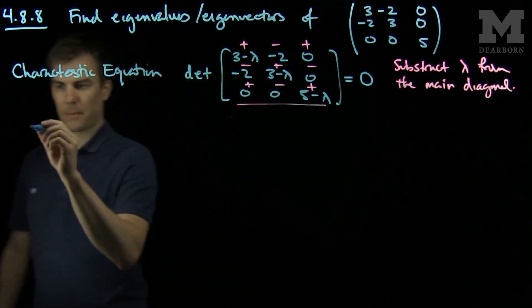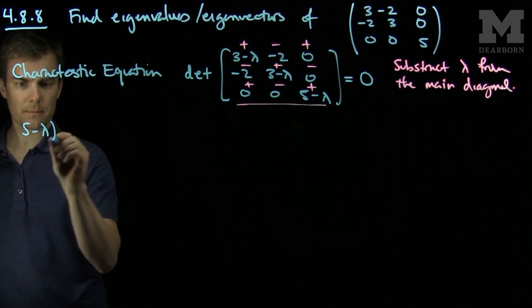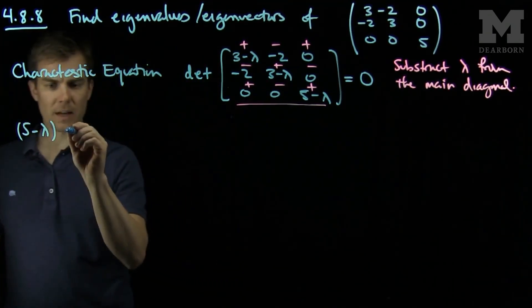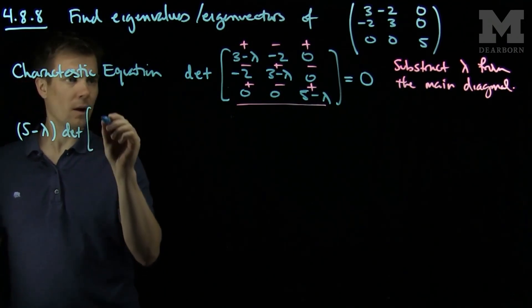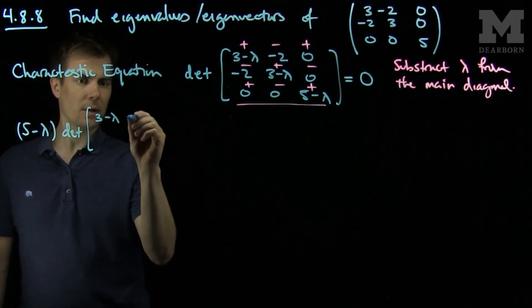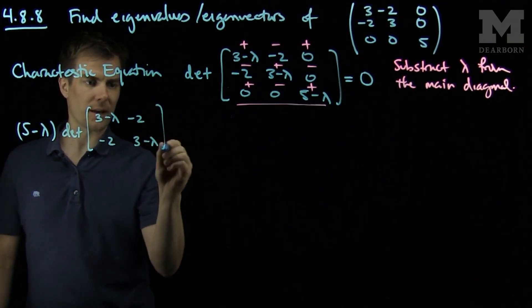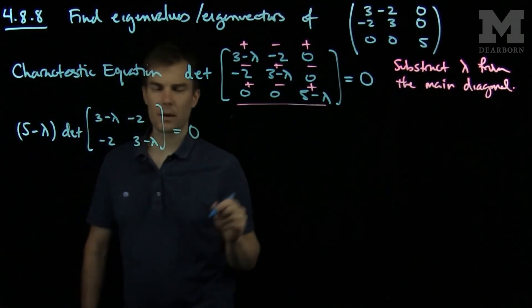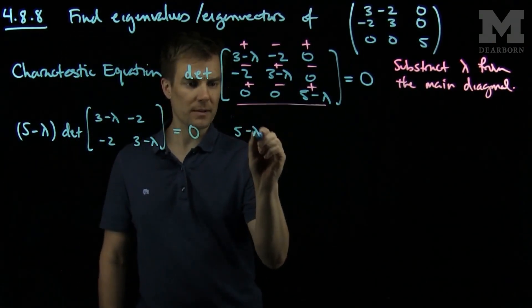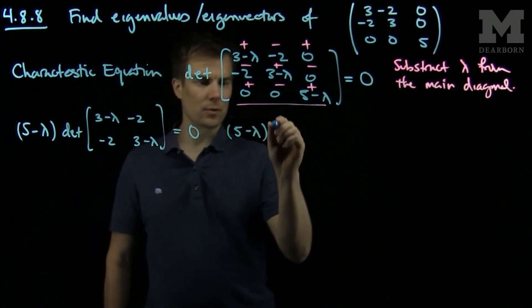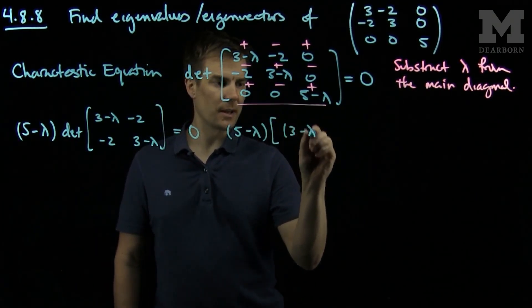The minors that correspond to this positive zero and this negative zero will contribute nothing. So we will just have 5 minus lambda, with a plus sign, times the determinant of 3 minus lambda, negative 2, negative 2, and 3 minus lambda.